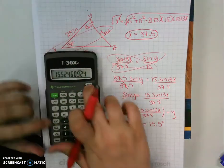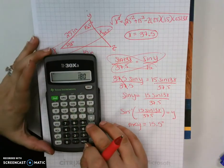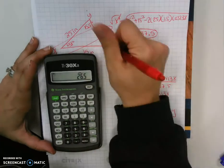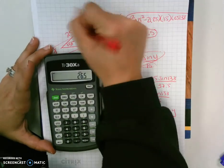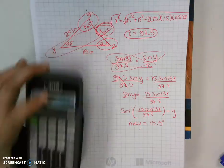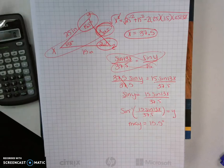15.5 degrees. And our last angle, 180 minus 138 minus 15.5, leaves us with 26.5 degrees for our final answer. And these are the three pieces of information that we needed to find to solve for this triangle.